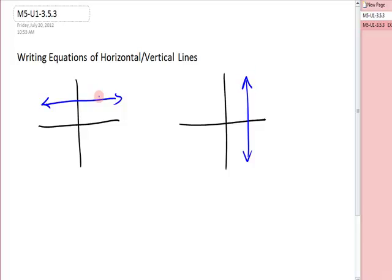Just so you remember, horizontal line cuts through the y-axis. When you cut through the y-axis, the form of the equation will be y equals a number. When you cut through the x-axis, the equation will be x equals a number. A horizontal line, the slope is zero. A vertical line, the slope is undefined.